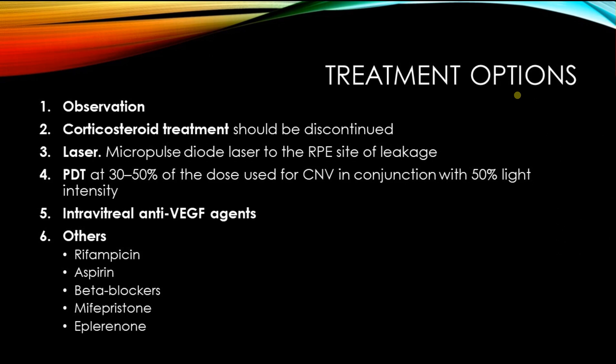The treatment option available for these extrafoveal leakage sites would be laser therapy. Other treatment options include observation, discontinuation of corticosteroids, micropulse laser to the RPE site of leakage. PDT at 30 to 50% of the dose used for CNV with 50% light intensity is useful but needs to involve the foveal area. Intravitreal anti-VEGF can be used but has limited results. Other treatments include rifampicin, which we used in this patient, aspirin, beta blockers, mifepristone, and spironolactone.